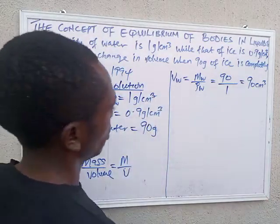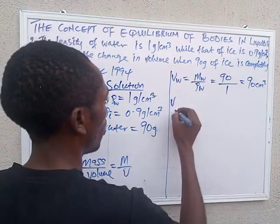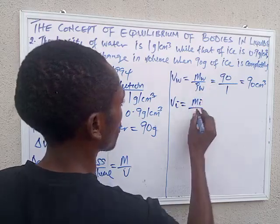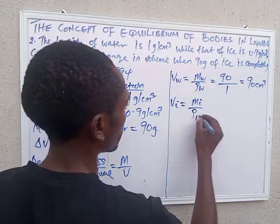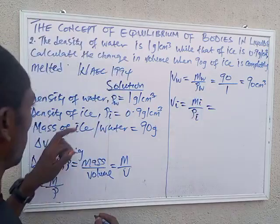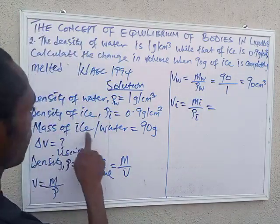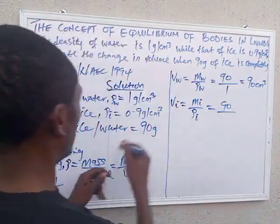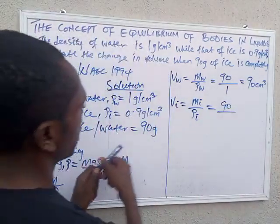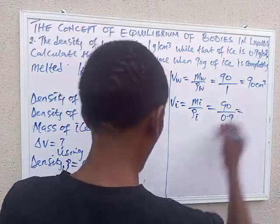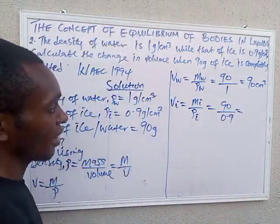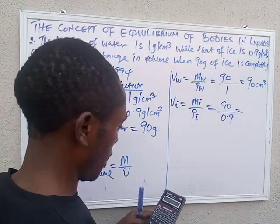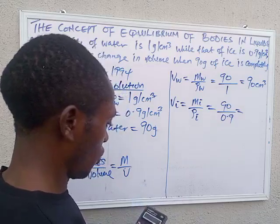Now for the volume of ice: volume of ice equals mass of ice over density of ice. The mass of ice is the same, 90 grams, and the density of ice is 0.9. So 90 divided by 0.9 gives us 100 centimeters cube.